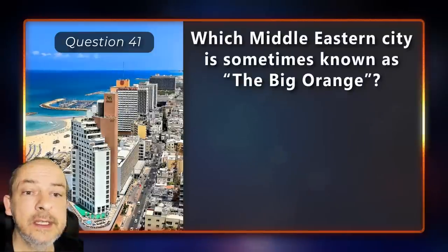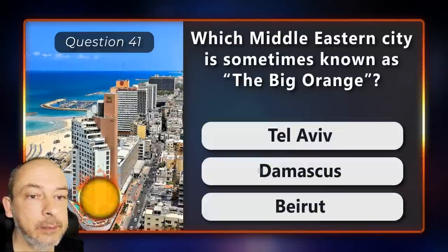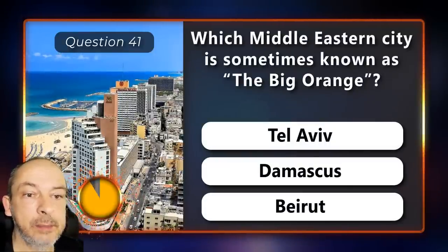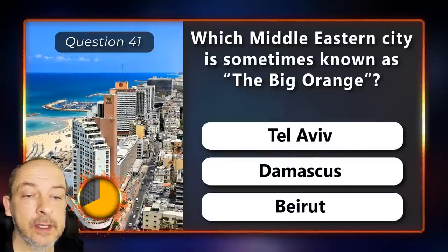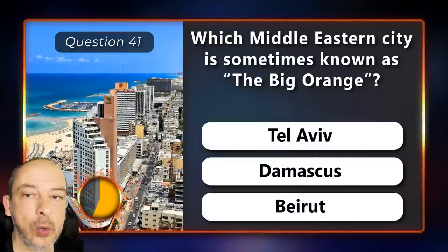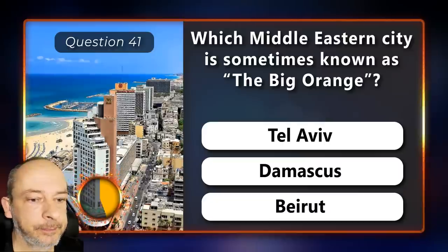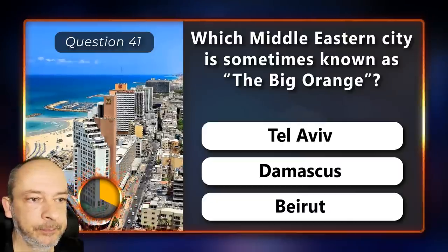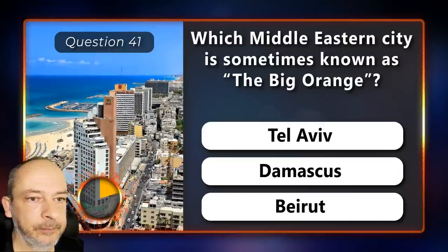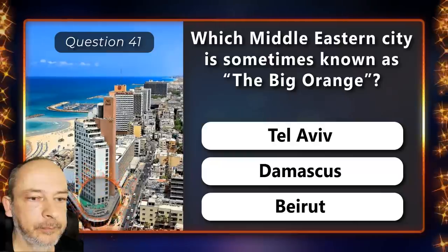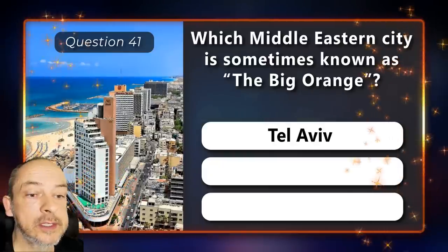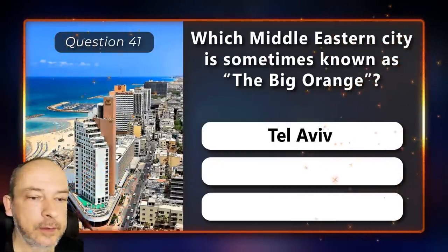Which Middle Eastern city is sometimes known as the Big Orange — Tel Aviv, Damascus, or Beirut? And the answer is Tel Aviv.